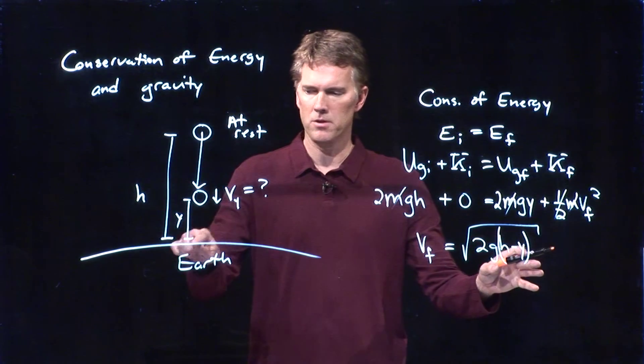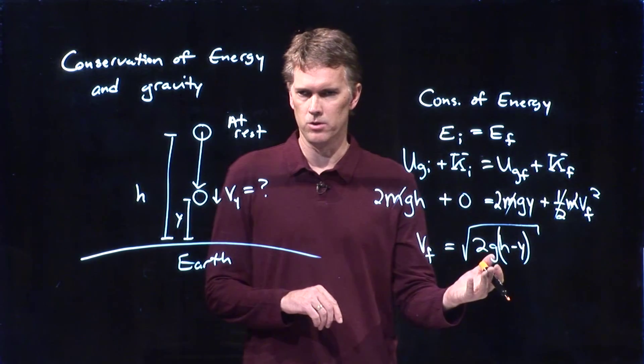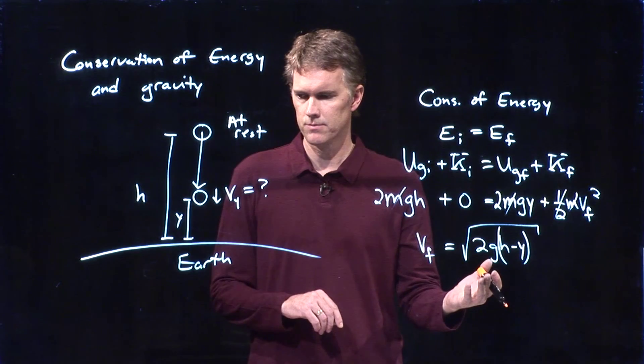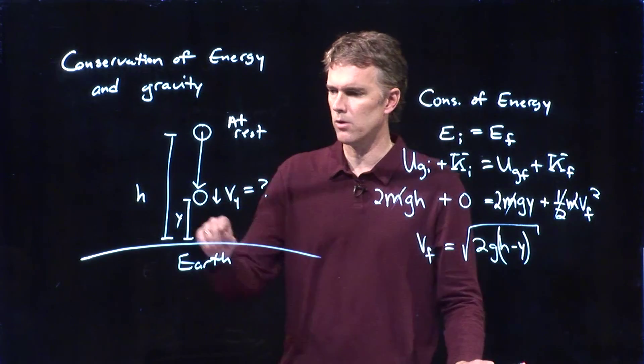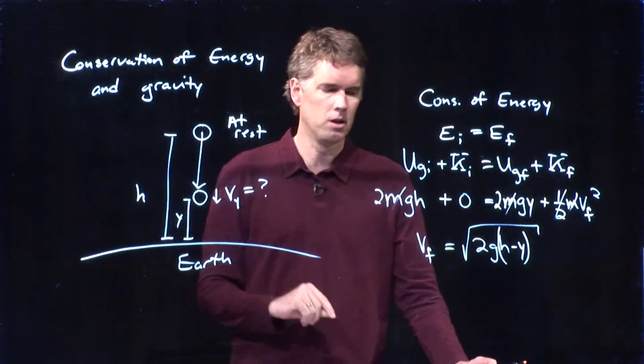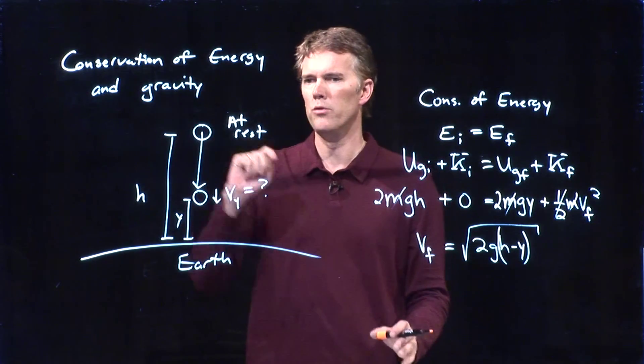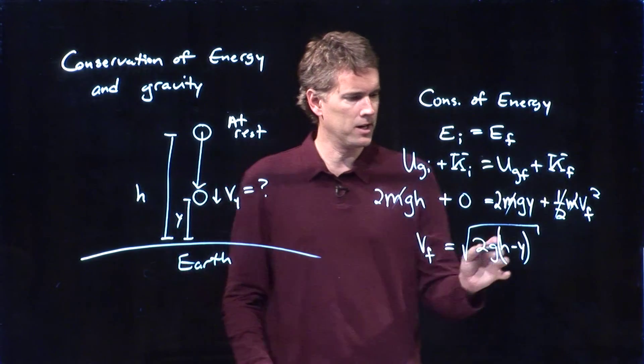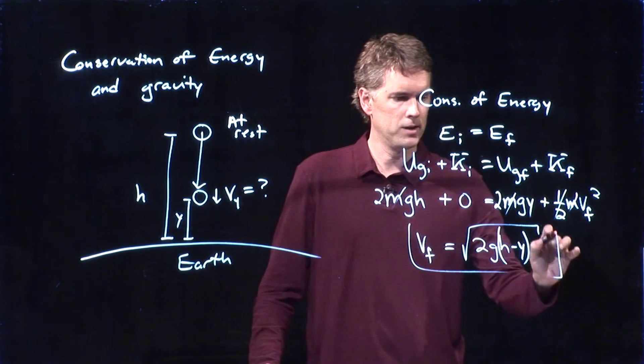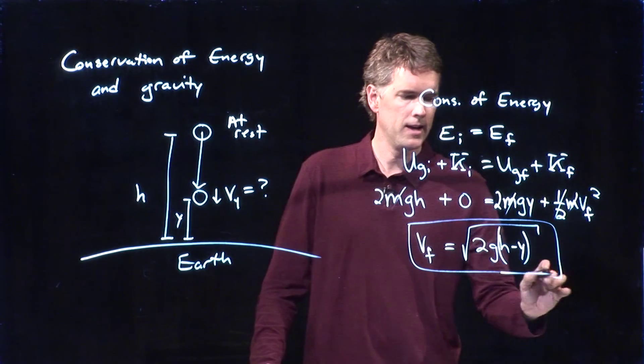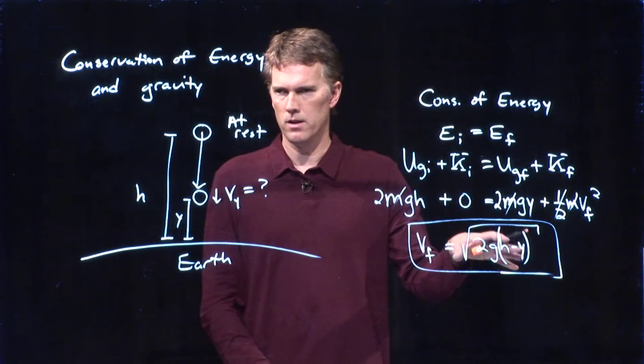If y goes back to zero, then we're back to our good old square root of 2GH. If y goes all the way up to h, it says that VF is zero. And that makes sense. You haven't moved anywhere yet. So this is a very nice way to get to the final speed at any height y that you want.